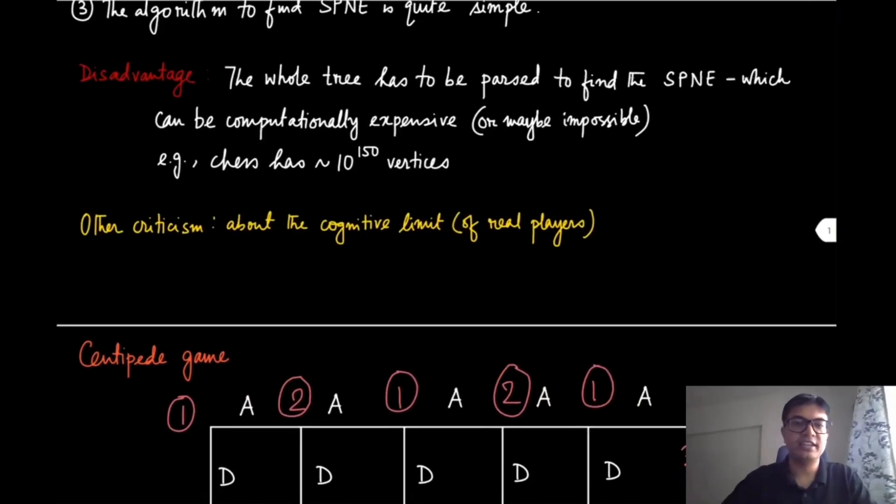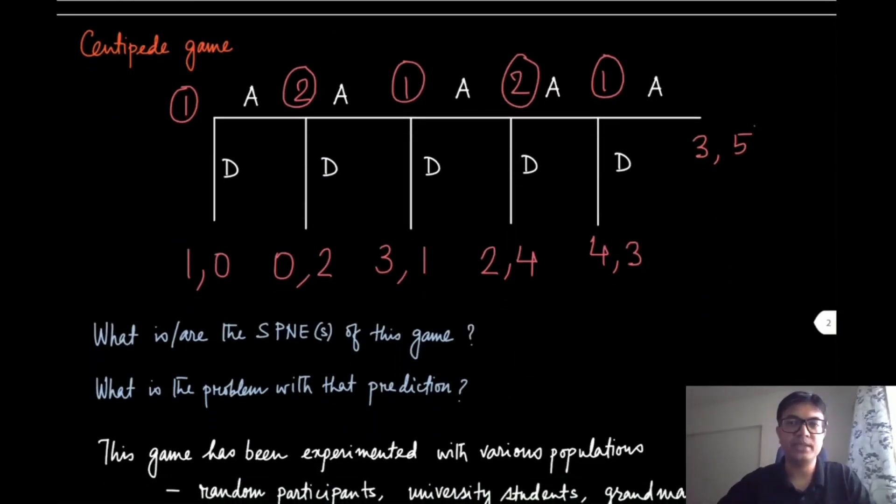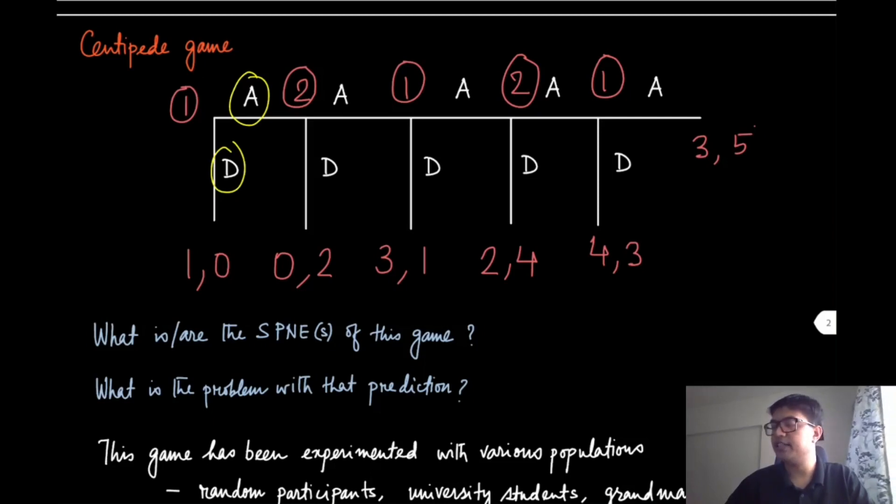SPNE also has some other criticisms, and these are mostly about the behavioral aspects—it asks about the cognitive limit of real players. Let's give an example: this game is called the centipede game, particularly because of the structure—it looks like a centipede. In every stage of this game, players take turns and they have two options: play across or play down. If the previous player has played across, then the next player gets a chance to play again with the same set of actions. If any player picks the action down, the game ends and gives a specific outcome.